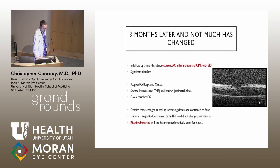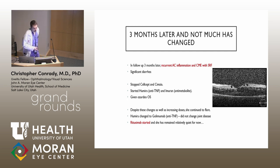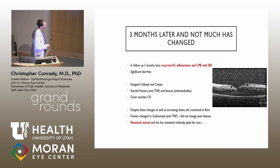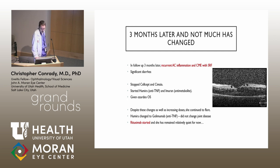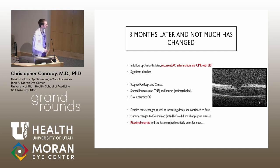She came back about a month later after that sub-Tenon's Kenalog injection with pressure fine. However, she returned three months later with recurrent AC inflammation, CME, and subretinal fluid visible on OCT in the left eye. She was also complaining of significant diarrhea, felt to be related to the CellCept. Both CellCept and Simponi were stopped because they were not controlling intraocular inflammation. She was started on Humira and Imuran, an anti-metabolite, and given an Ozurdex in the left eye due to the CME and subretinal fluid. Despite these changes and increasing doses over several months, she continued to have both ocular and joint flares. Humira was eventually changed to another anti-TNF agent, which did not control her joint disease but seemed to be doing okay from an ocular standpoint.